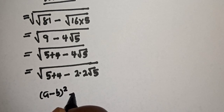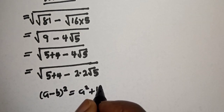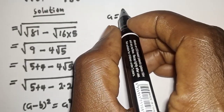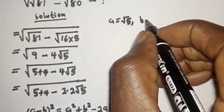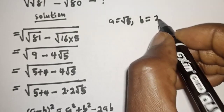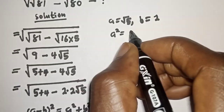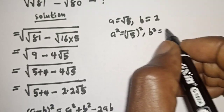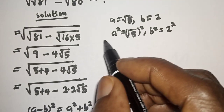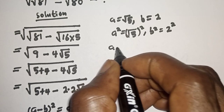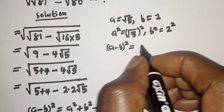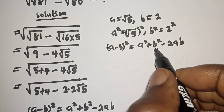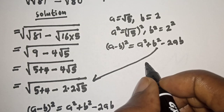Note that (a minus b) squared equals a squared plus b squared minus 2ab. Here a equals root 5 and b equals 2. So a squared equals (root 5) squared equals 5, and b squared equals 2 squared equals 4. Comparing, the expression inside matches the form of (a minus b) squared.